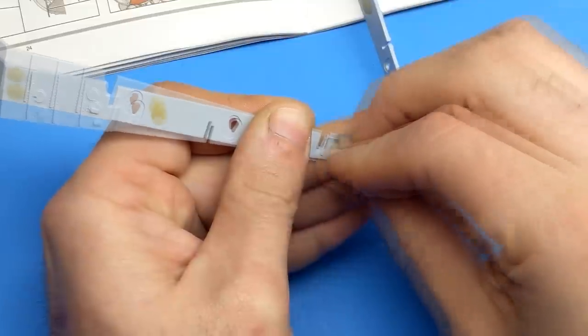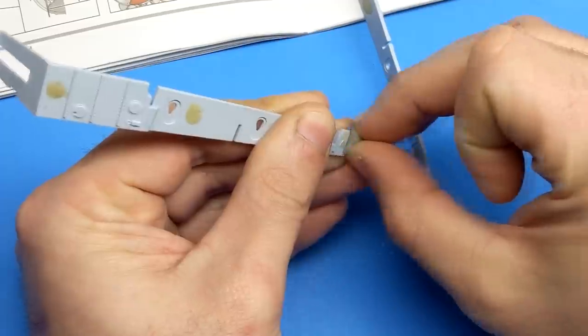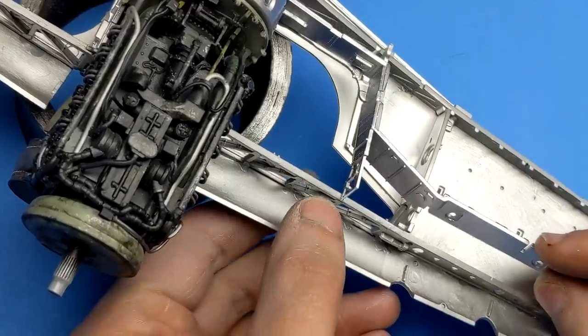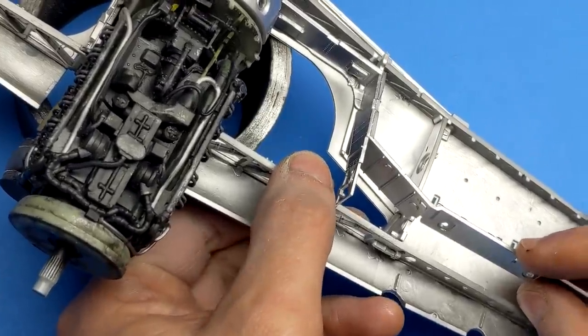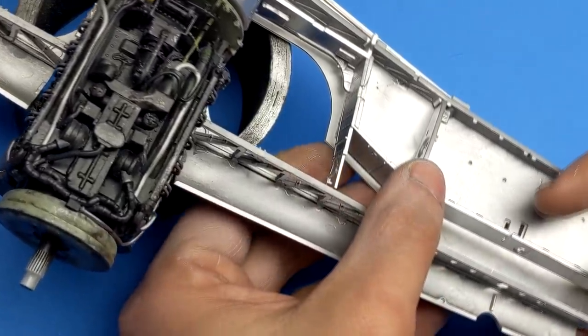While we're talking about coulda shoulda woulda, we'll also talk about another set of ejection pin marks that are in an area that really doesn't make sense. You don't see the back side of this panel so maybe it would have made more sense to put them there. However, it's more sanding and filling before you get some wing spires in place.